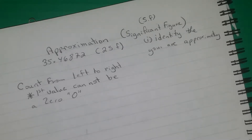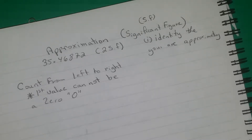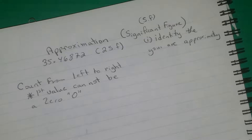In significant figures, we count from left to right, and this is very important. Your first value cannot be a zero. So in some cases you have 0.00235 — those leading zeros do not count. You omit them and start from a non-zero. If afterwards you have zeros in between numbers, then they do count, but the first digit you count cannot be a zero.